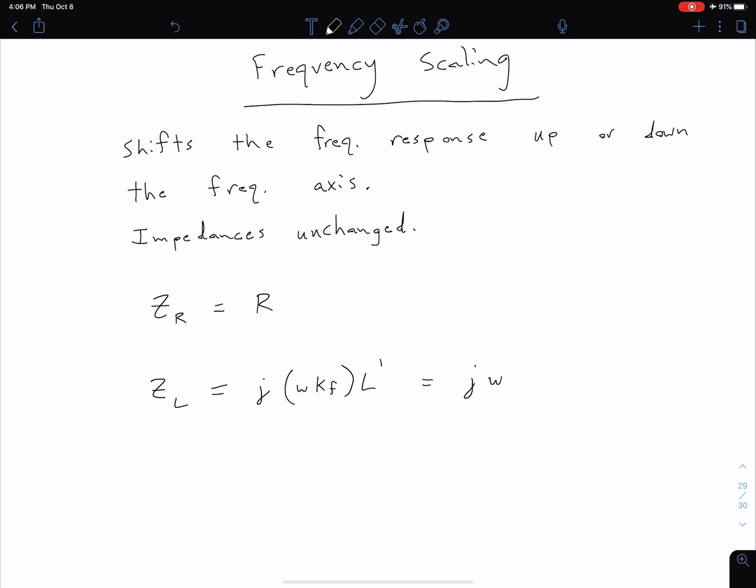to remain the same as it was initially, equal to j omega L. By comparing these two equations, we see that L' times kf needs to equal L. Therefore, L' equals L divided by kf.